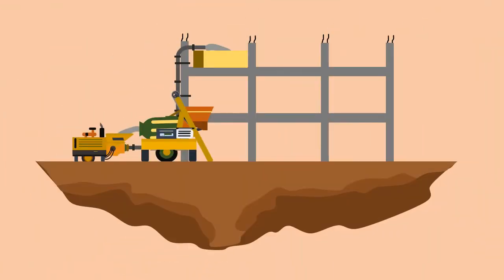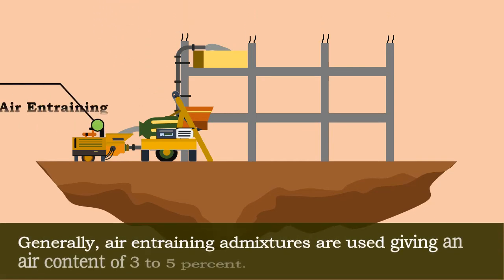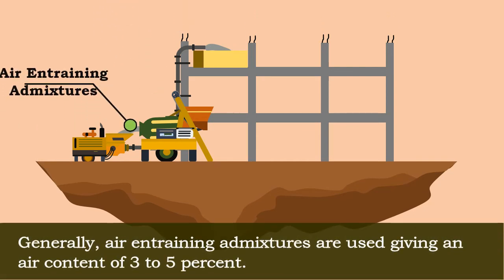As the pumping compacts the concrete to some extent and reduces the slump by about 25 percent at the delivery end, to offer additional lubrication, admixtures can be added to reduce bleeding and segregation. Generally, air entraining admixtures are used, giving an air content of 3 to 5 percent.